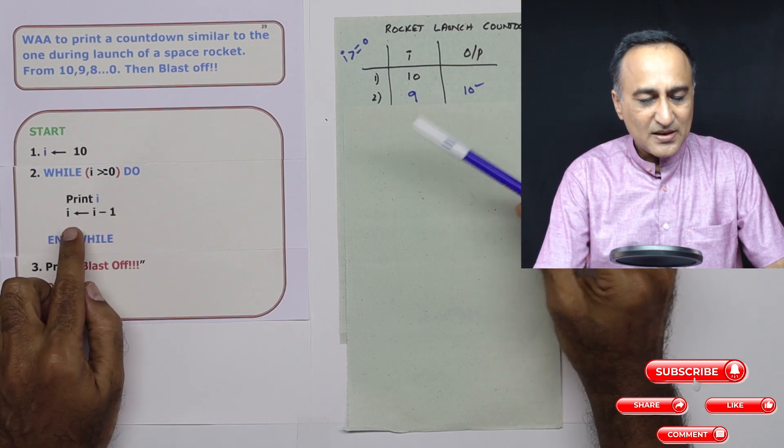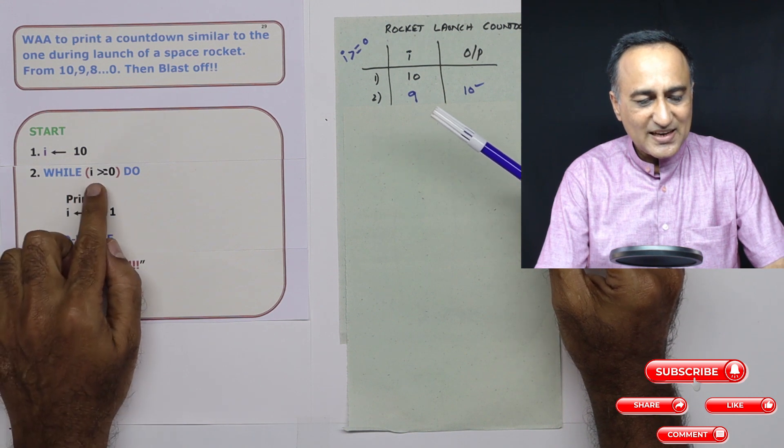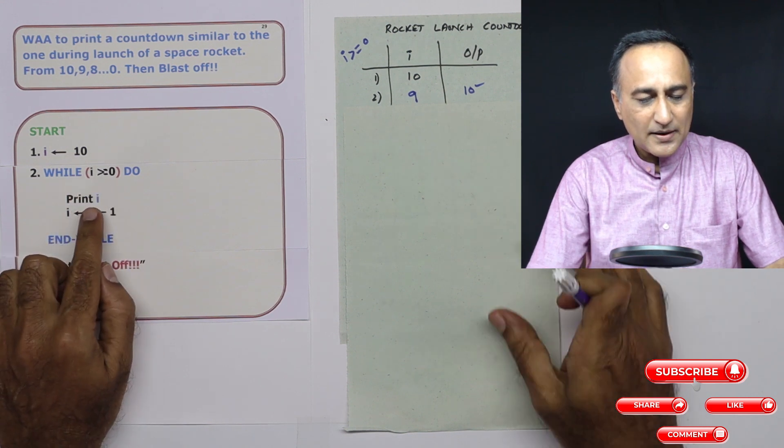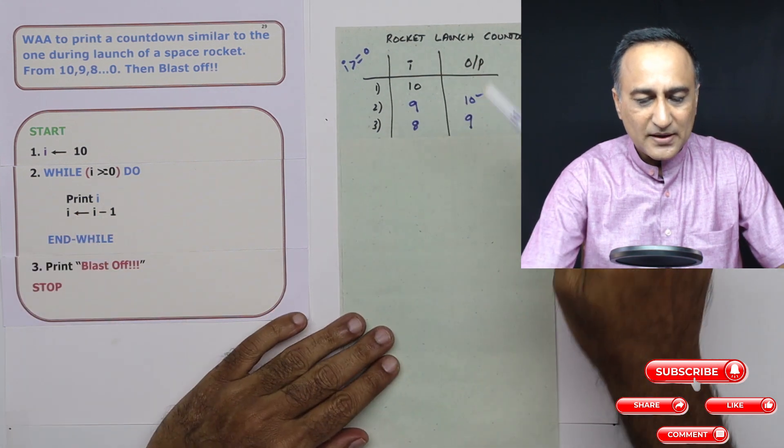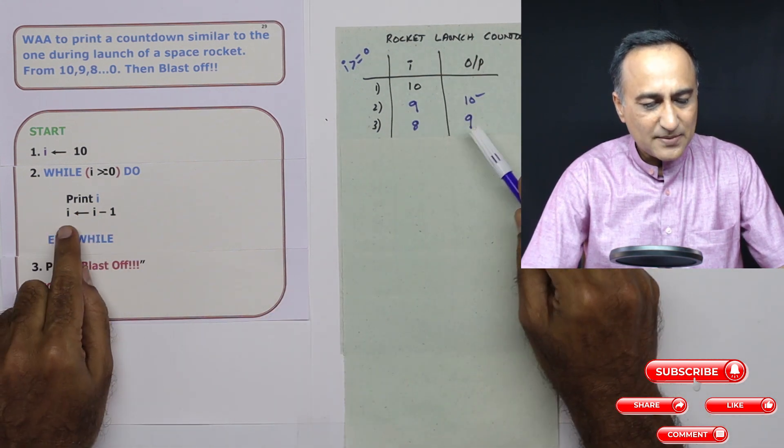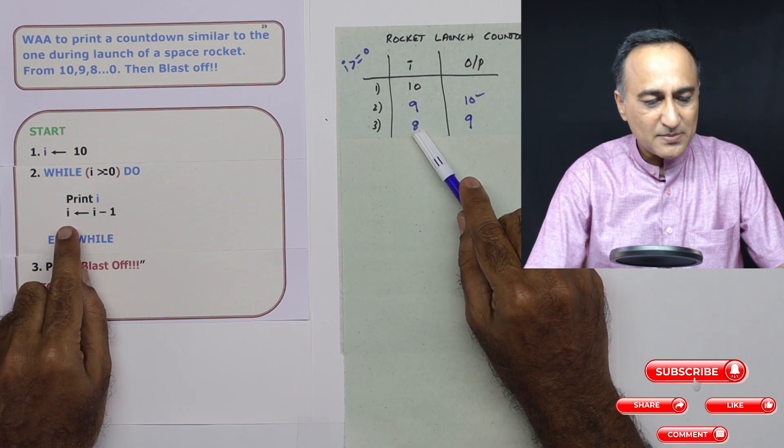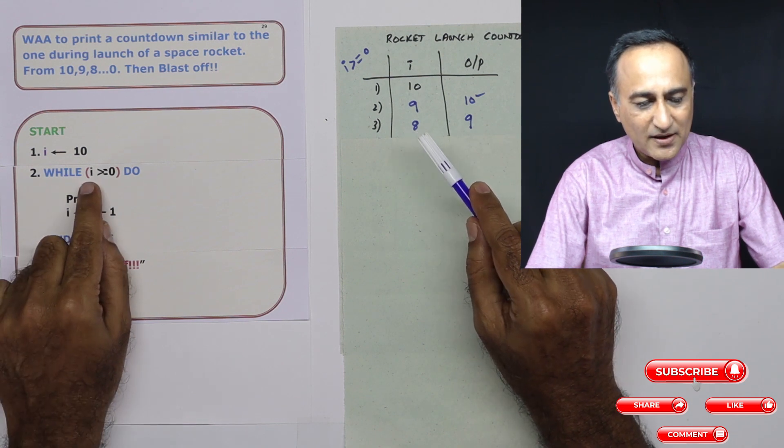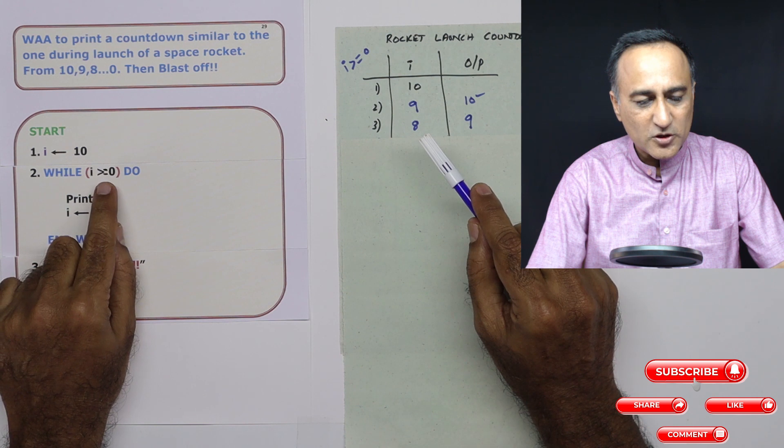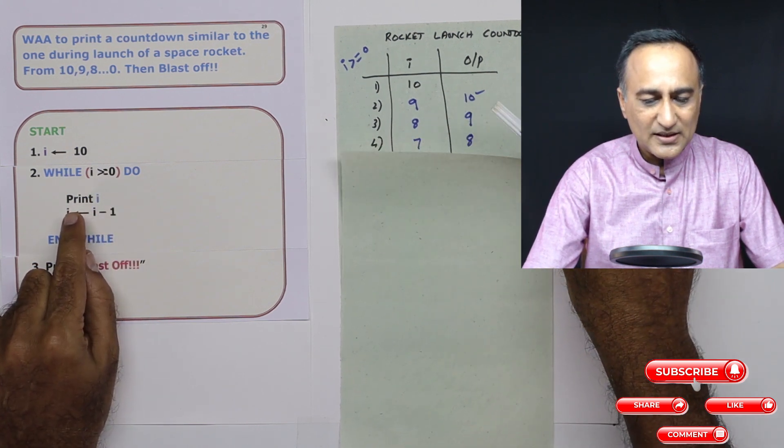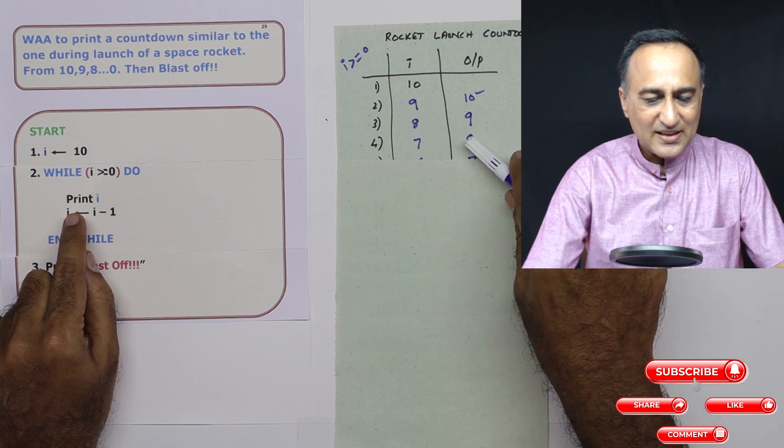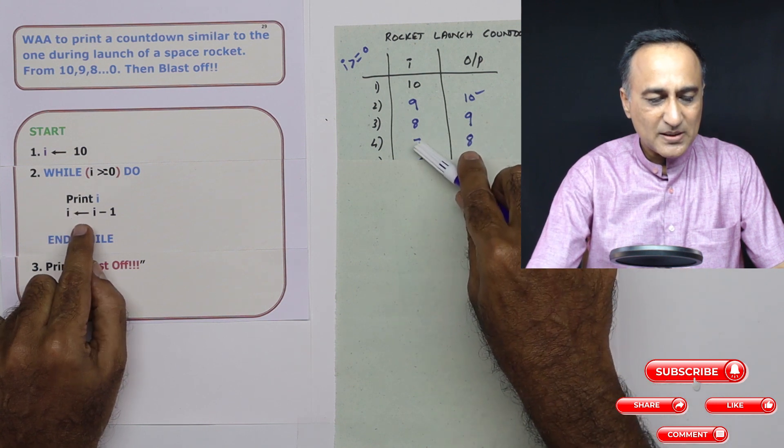I becomes nine, then I go back here. Is nine greater than or equal to zero? Then I'm going to print nine here. And in the next step, the value of I is reduced by one, it becomes eight. I go back here, it is greater than or equal to zero is true. So I come and print eight on the next line, then I is reduced by one, it becomes seven.